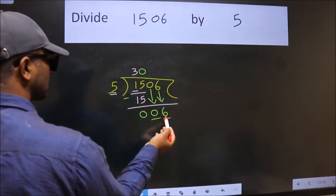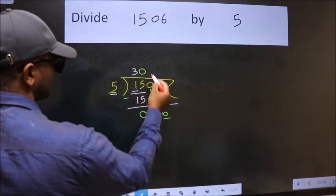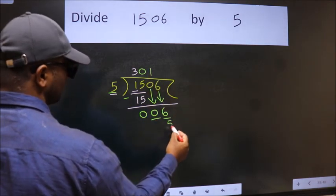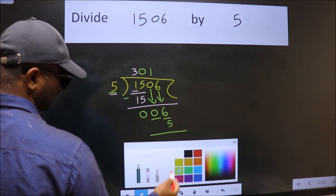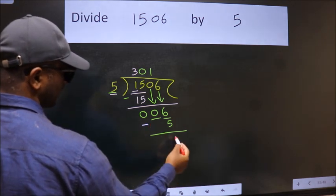A number close to 6 in 5 table is 5 times 1, which is 5. Now, we subtract. We get 1.